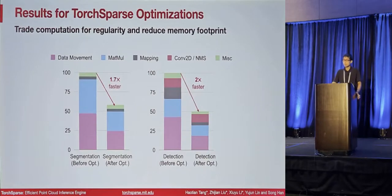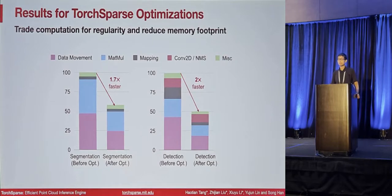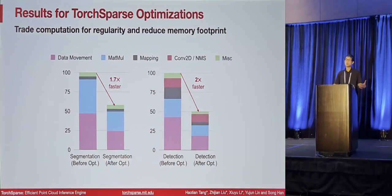In this paper, we focus on two important principles: we want to trade computation for regularity, and we want to reduce the memory footprint of the sparse convolution computation. With these optimizations, we are able to achieve 1.7 to 2 times speedup over the baseline implementation.